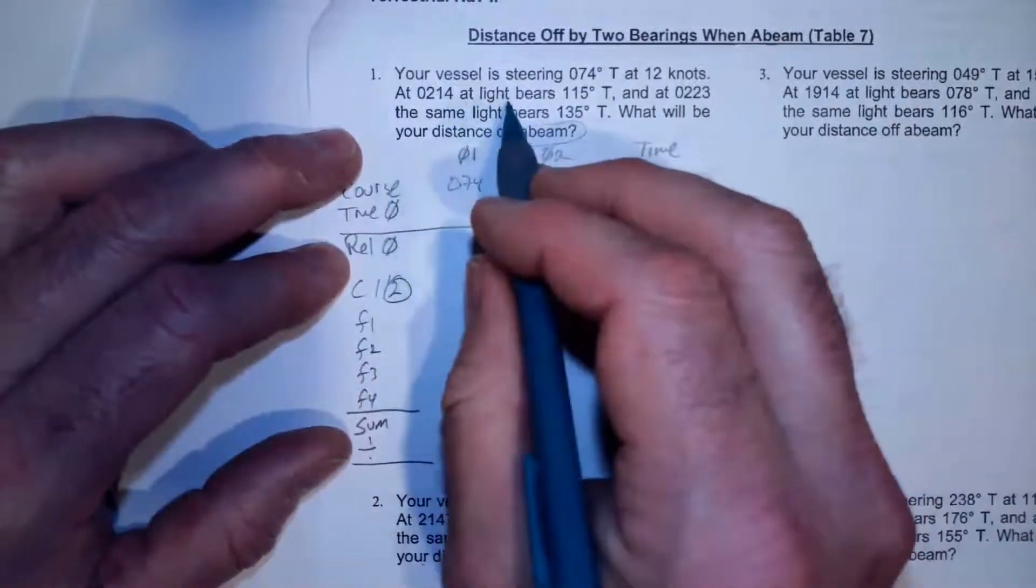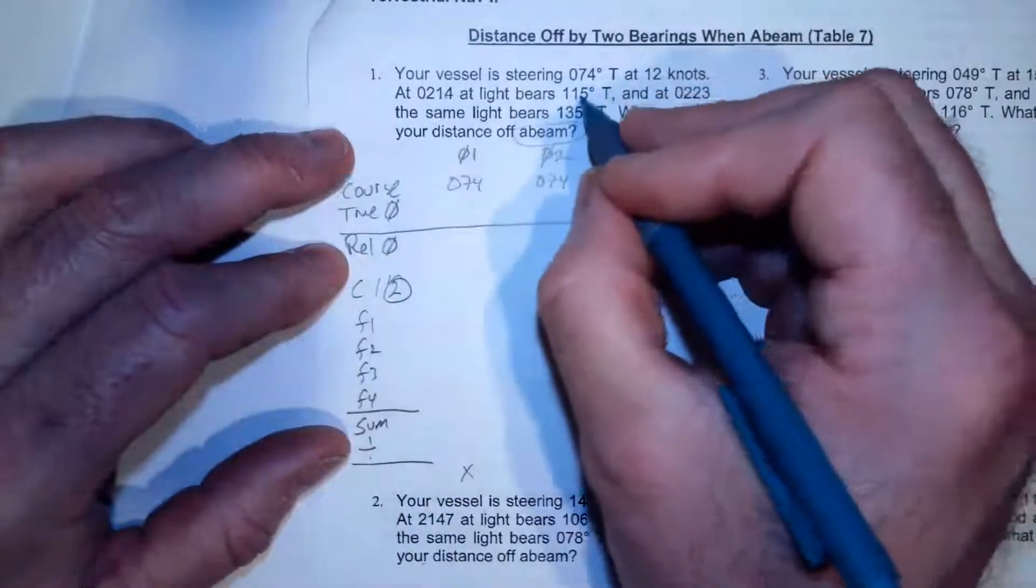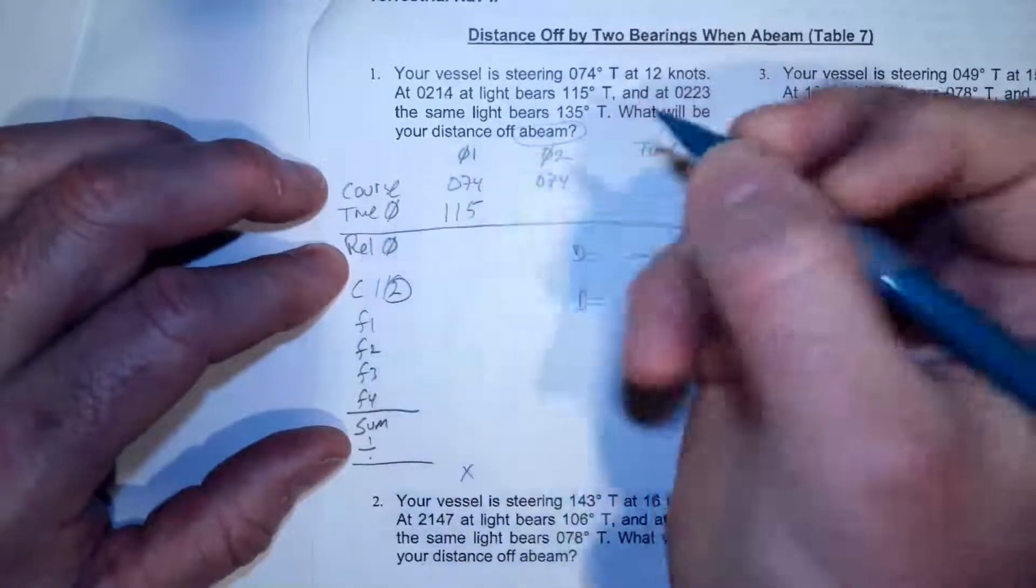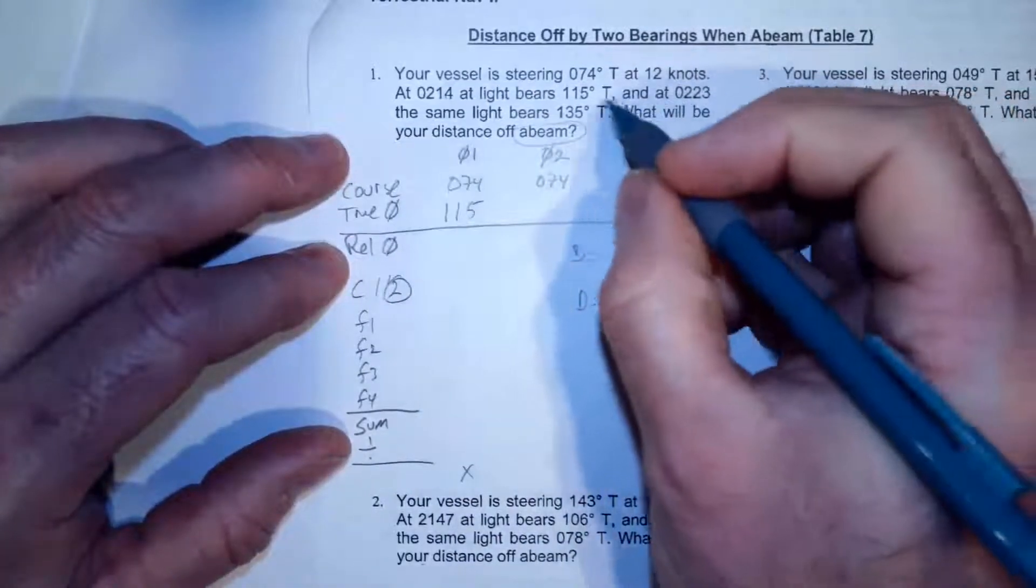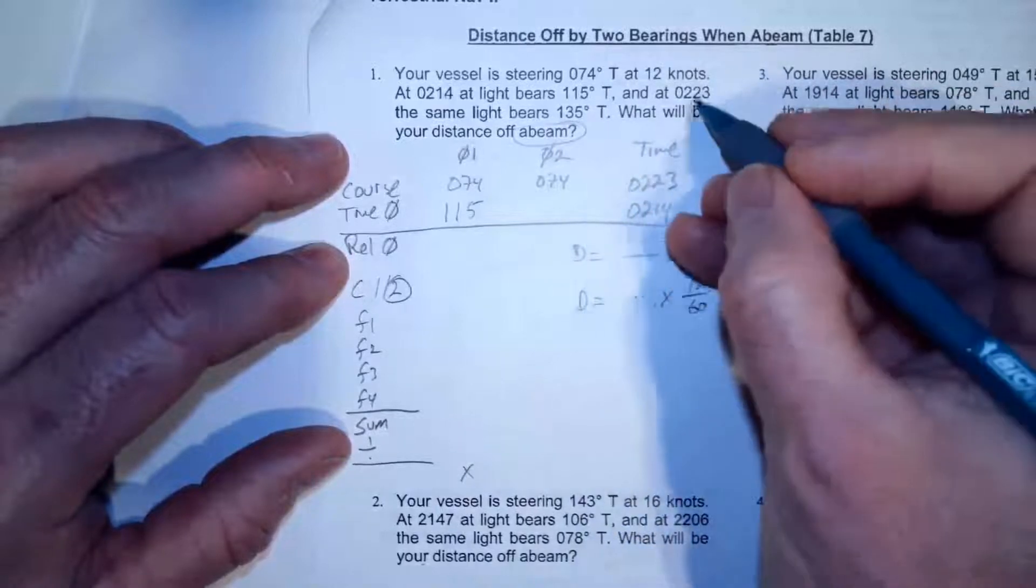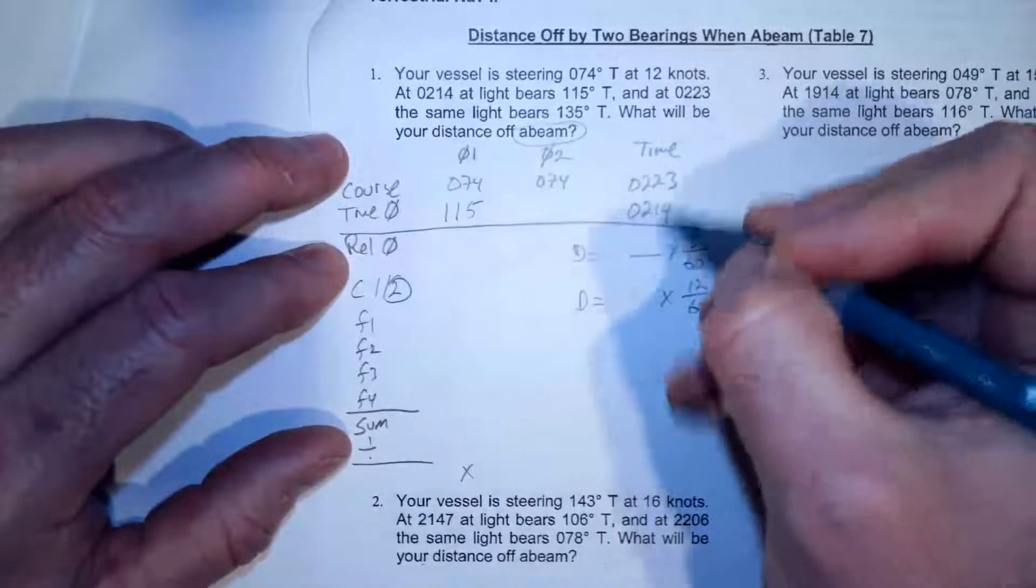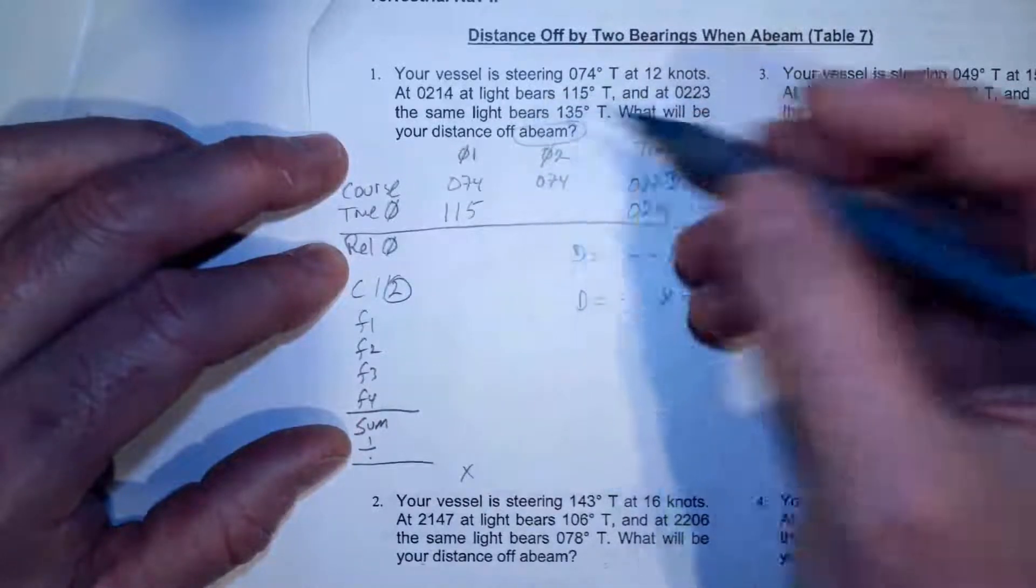At 0214, so my time is 0214, the light bears 115. So here I go, 115, and that was 0214. And then at 0223, the light bears 135. Usually I put the later one at the top just to make the math easier. The light bears 135.